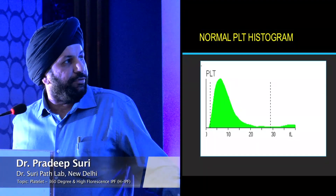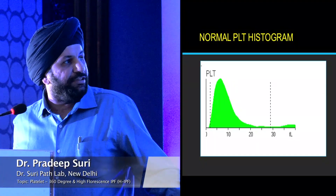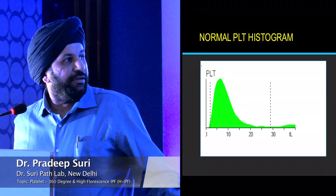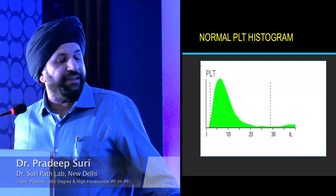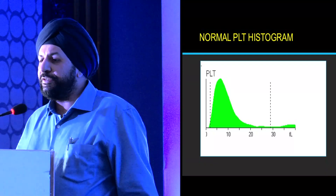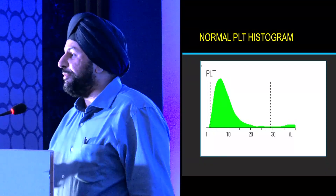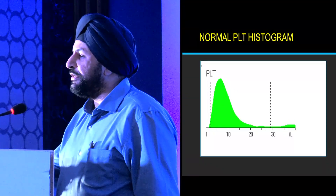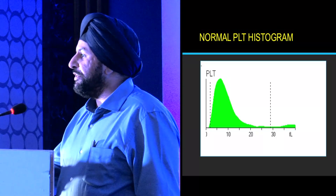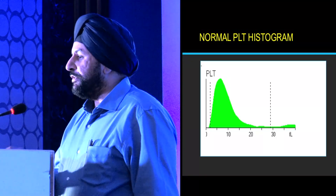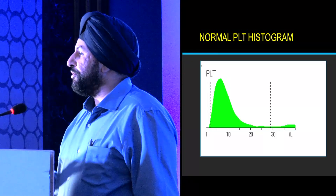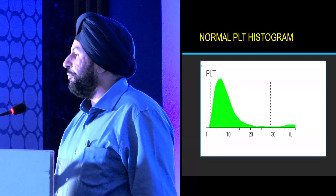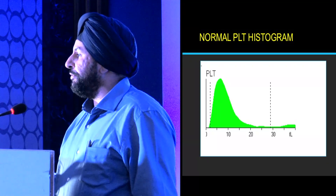This is a normal platelet histogram. You can see that the curve is beginning and ending at the baseline between the two variable discriminators. The lower discriminator is at 2 to 6 femtolitres and the upper one is between 12 and 30 femtolitres. If I see this histogram, I am okay to report any platelet count based on impedance count.